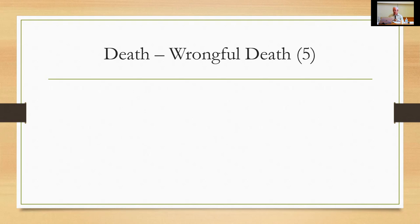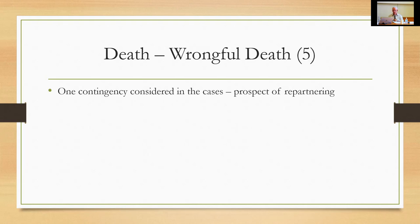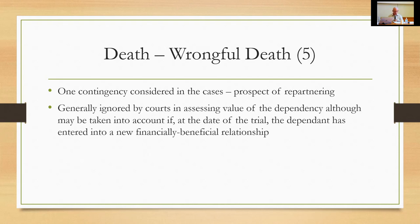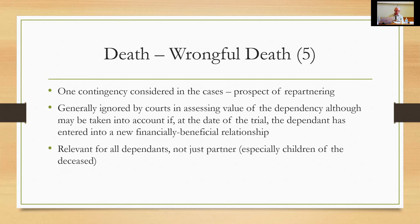One contingency singled out in Australia is the prospect of re-partnering: should we take into account, in assessing the value of the dependency, the surviving partner re-partnering? After some uncertainty, this is generally ignored by the courts, although it may be taken into account if, at the date of trial, the dependant has already entered into a new financially beneficial relationship — reflected in the discount for contingencies. This is controversial and not done as a matter of course, but it is possible. It is relevant not just for the surviving partner but also for children of the deceased, who may receive a benefit from their surviving parent's re-partnering.